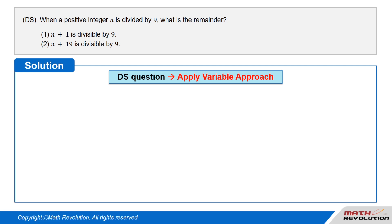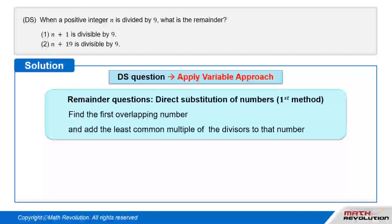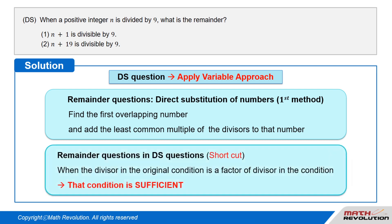Let us solve this DS question using the variable approach. When dealing with remainder questions, there are two methods we can follow. The first method is direct substitution of numbers: find the first overlapping number and add the least common multiple of the divisors to that number. A shortcut for remainder DS questions: when the divisor in the original condition is a factor of the divisor in the condition, that condition is sufficient.